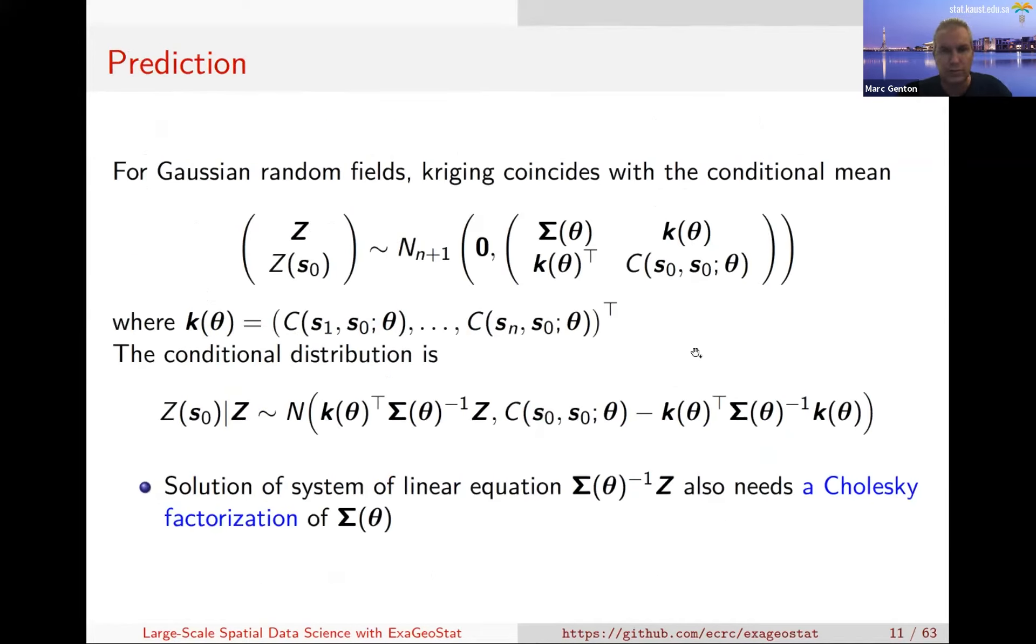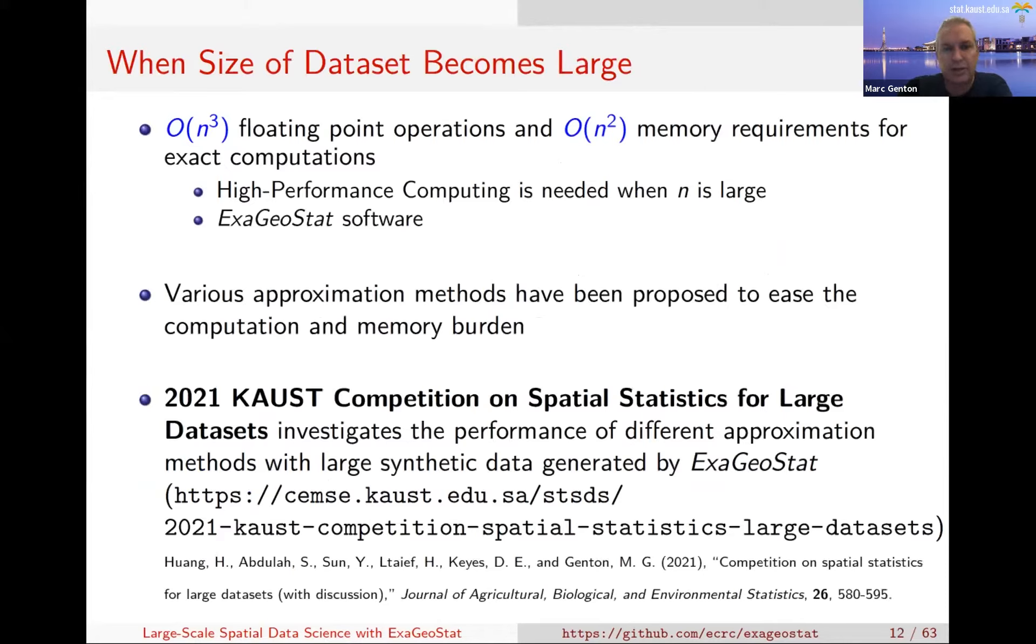Eventually we want to do predictions. If you assume that everything is Gaussian, Z is what you observed of dimension n, and Z at a new location s_0 is what you want to predict. You look at the conditional distribution of Z at the new location given the observation vector Z. You can use the conditional mean as your Kriging predictor. But there you have a linear solve, so you will need Cholesky factorization of sigma. When the data set becomes large, when n is large, this is very computationally intensive.